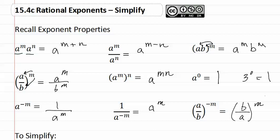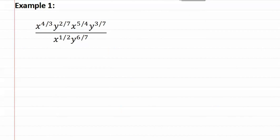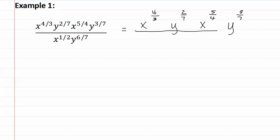Let's see how this applies in example one. We start by rewriting it, leaving a little bit of space between each term: x to the four-thirds, y to the two-sevenths, x to the five-fourths, and y to the three-sevenths — all over x to the one-half, y to the six-sevenths.